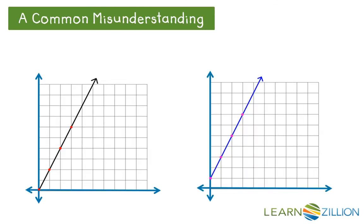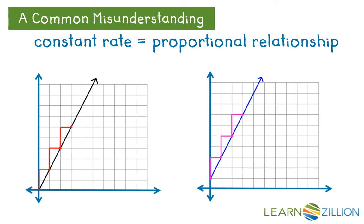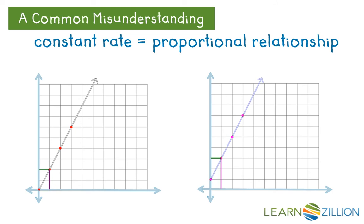Now take a look at these two graphs. You might think, as many students do, that because they both show a constant rate they both show a proportional relationship — but that is not the case. Yes, they both show a constant rate; we can see that because the lines are straight. However, they don't both show proportional relationships. Let's look specifically at the relationship between the x and y values on the graph on the left.